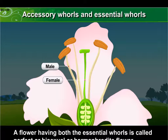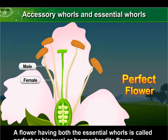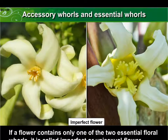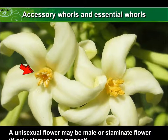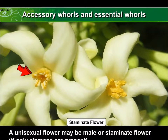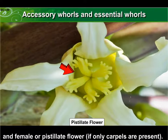A flower having both the essential whorls is called a perfect, bisexual, or hermaphrodite flower. If a flower contains only one of the two essential floral whorls, it is called an imperfect or unisexual flower. A unisexual flower may be a male or staminate flower (if only stamens are present) or a female or pistillate flower (if only carpels are present).